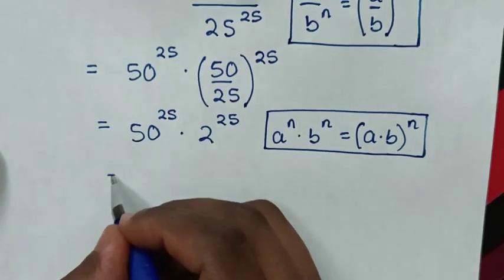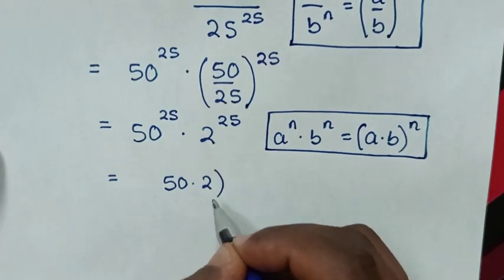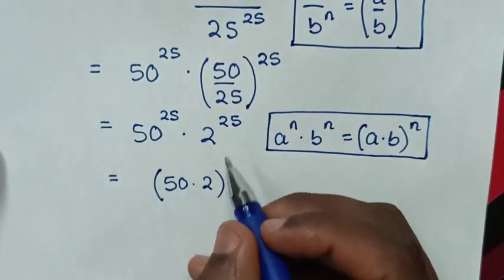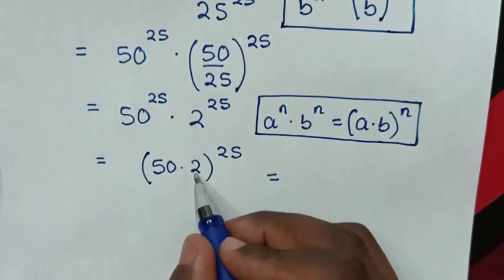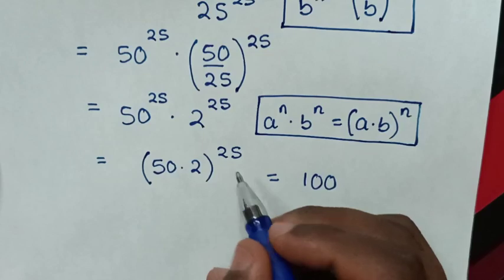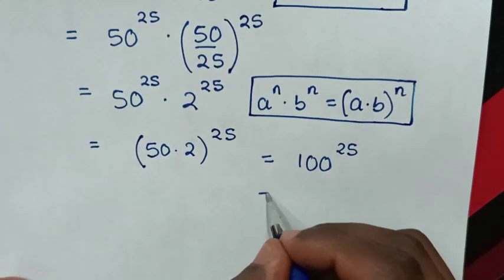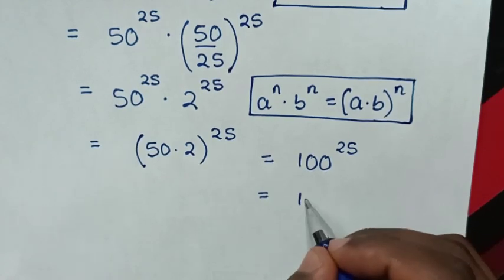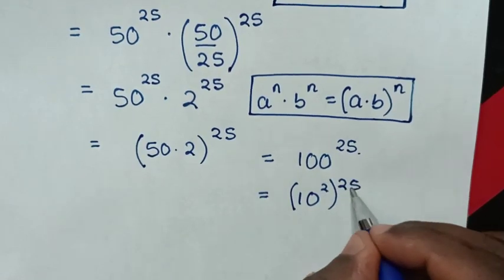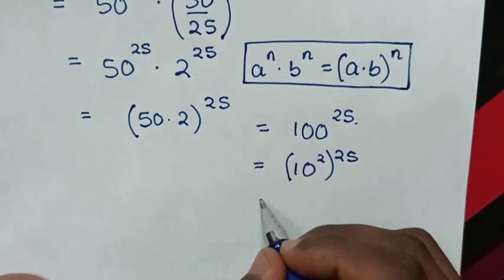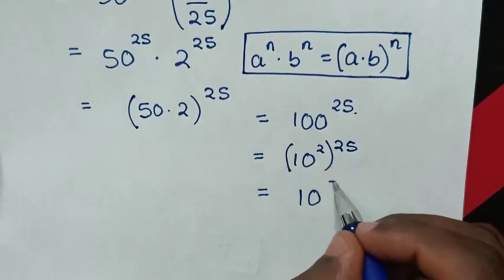So it will be equal to (50 times 2) power of 25, which is 100 power of 25. Then it will be equal to 100 power of (2 times 25), which is 100 power of 50.